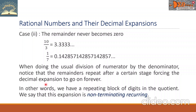In other words, we have a repeating block of digits in the quotient. We say that this expansion is non-terminating recurring.